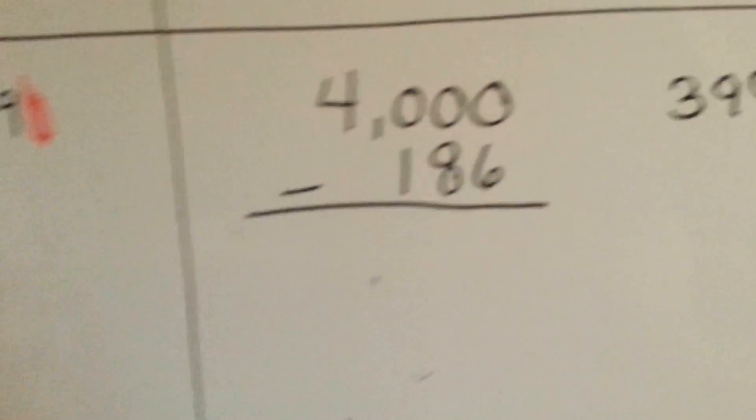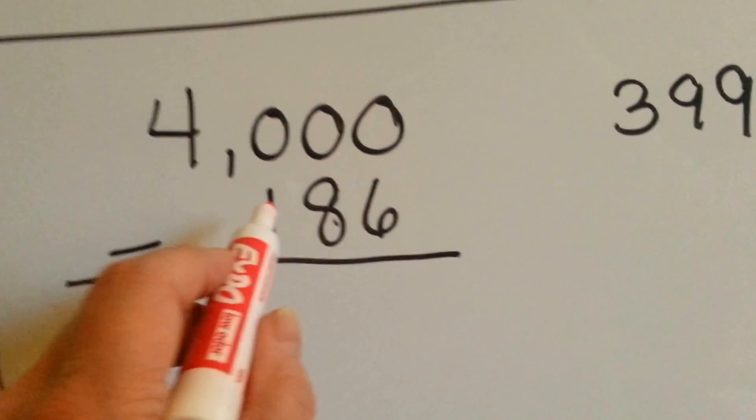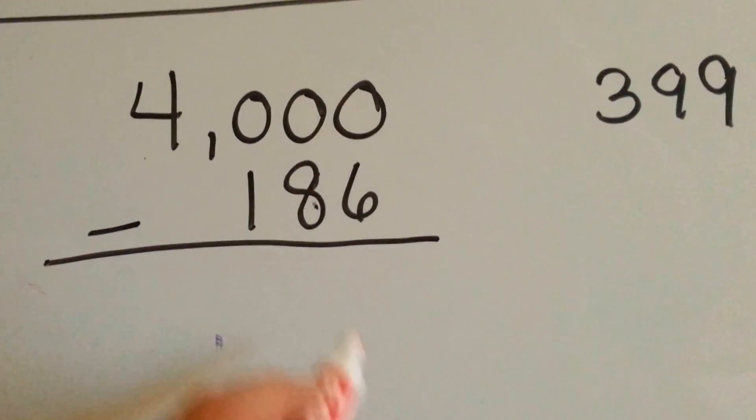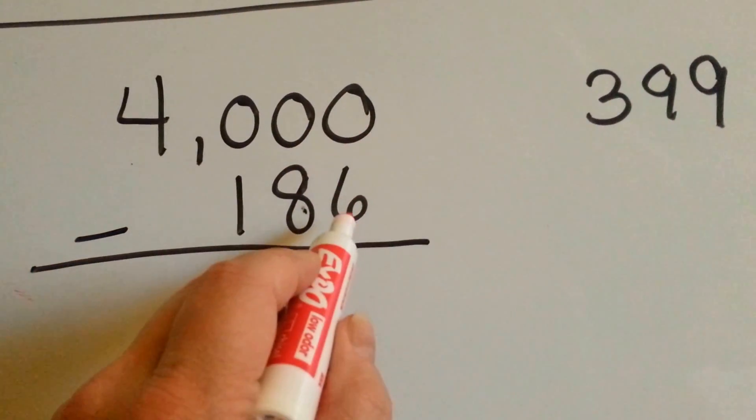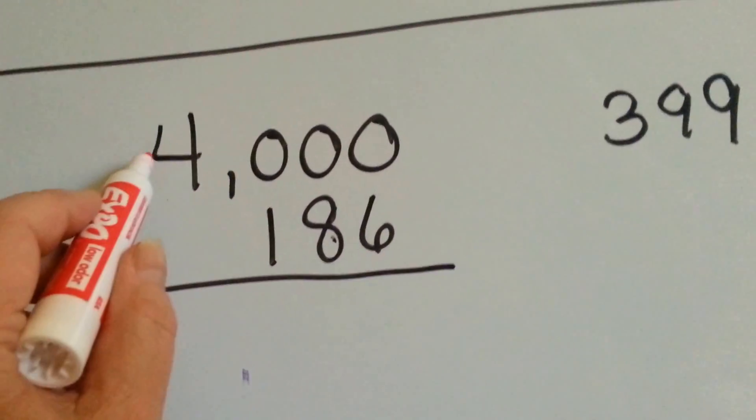4,000 minus 186. Well, you can't have 0 and take 6 away, but we have nothing to borrow from. That's 0, and that's a 0. It's way over here. So the best thing to do is,